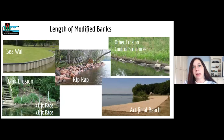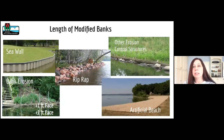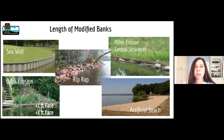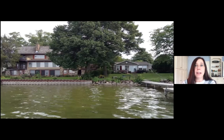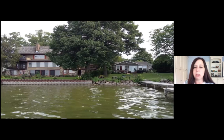Another important set of data has to do with any modifications to the bank, including artificial beaches, seawalls, rock riprap, and other erosion control structures. We also gather information on the amount of bank erosion — later, landowners with property that contains erosion can be contacted to offer assistance. This photo shows a good example: on the left, a property with a seawall, and on the right, an example of riprap.